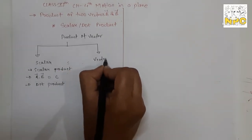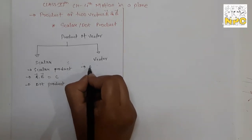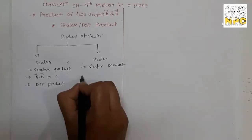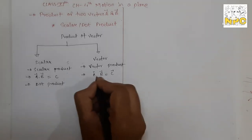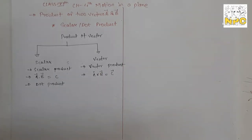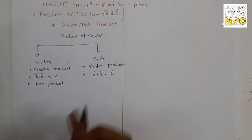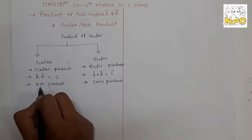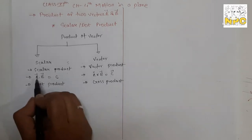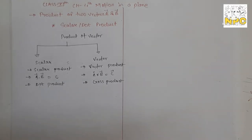If we consider the product to give a vector quantity, then we take vector a as well as vector b, and the resultant c is a vector quantity. In that case, the operator used is the cross operator — we generally call this the cross product. So if the resultant is a scalar quantity, it is the dot product; if the resultant is a vector quantity, it is the cross product. In this lecture, we will learn the scalar product, also called the dot product, and in the next video, we will learn the cross product.